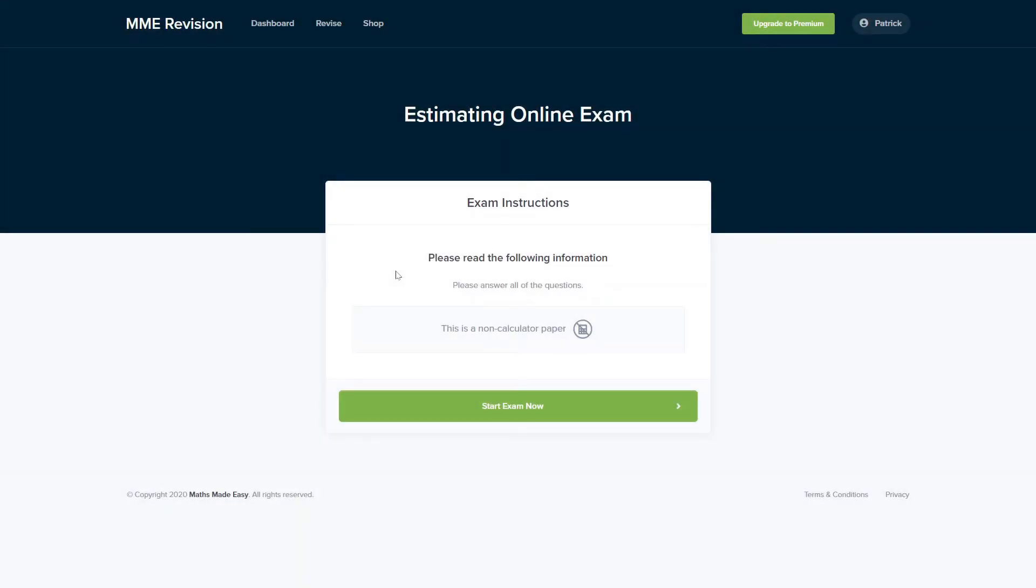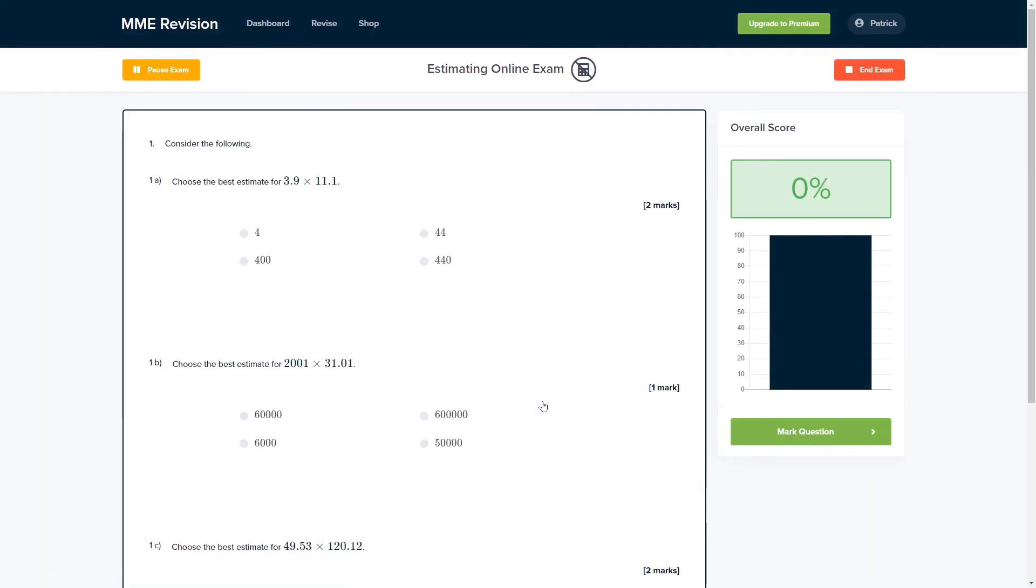If you're feeling good about estimation questions, you can practice them with our online exam. It's available through our revision platform. If you take the test, you'll find loads of different questions to have a go at, and you'll get instant feedback on everything. So it's a really good way of keeping track of where you're going wrong, how you can improve, and so on. If you're interested, you can take the test by clicking the link below.